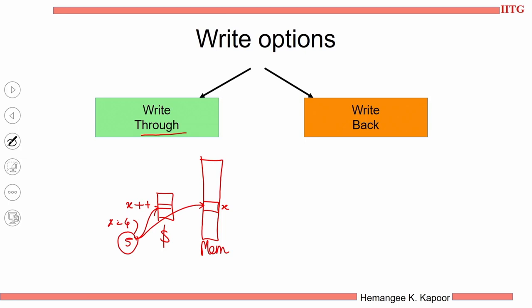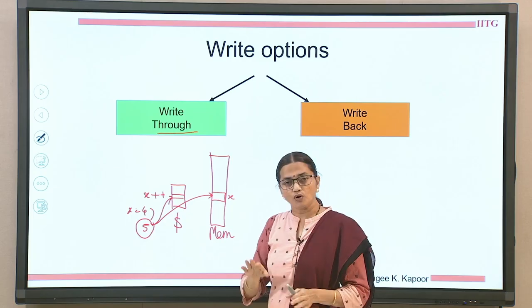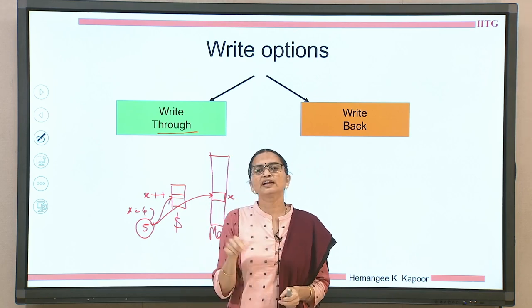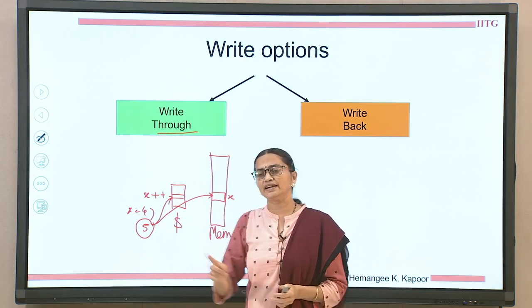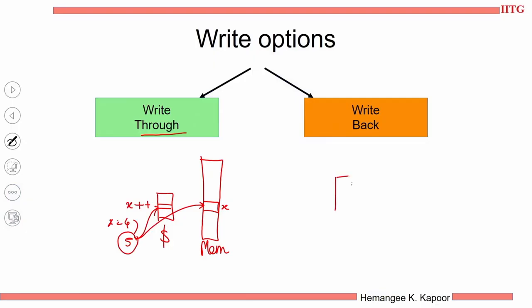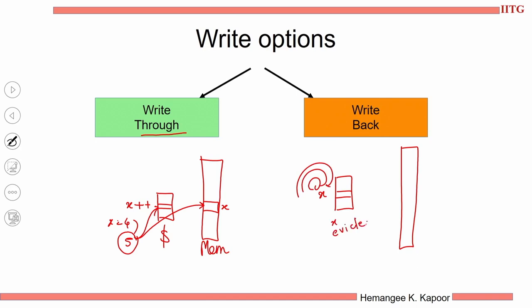Both these updates have to take place in write through. The other option is: don't go all the way to memory. Just keep on accumulating changes in the small cache and only send them to the main memory when you evict the block. So x sits here and x keeps on getting updated. Several changes to x occur, and eventually when x gets evicted — because some other block wants to come and sit in that position — at that time you go and update it in the main memory. This is called the write back approach.